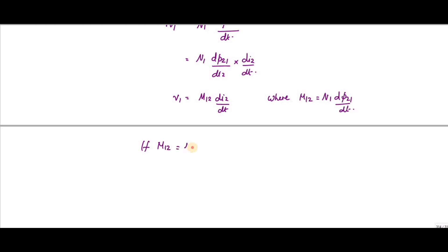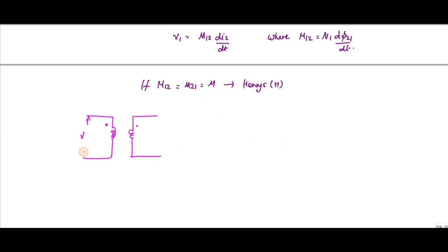So if M12 and M21 are equal, we call it M. M represents the mutual inductance between the two coils and L is the self-inductance. Both are measured in Henries. This is V1 and this is V2, and these are L1 and L2.